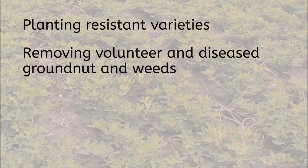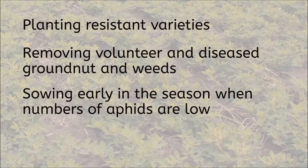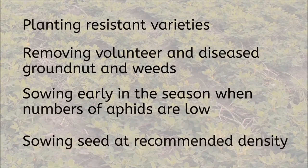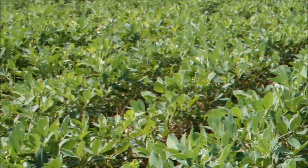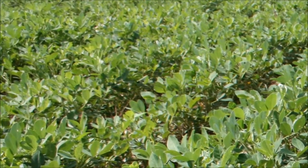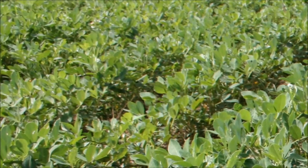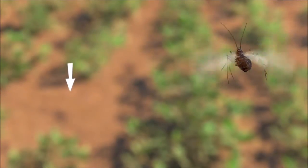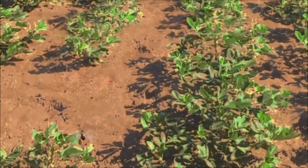By removing volunteer and diseased groundnut and weeds. By sowing early in the season when numbers of aphids are low. By sowing seed at the recommended density. A good density of plants means that the soil quickly becomes covered and there are few bare patches. Bare patches seem to help guide the aphids to find plants.